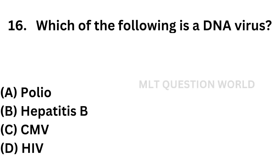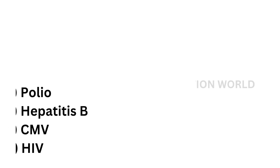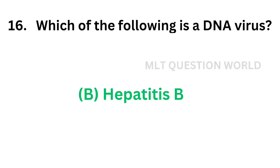Question number sixteen: Which of the following is a DNA virus? Option A: Polio, Option B: Hepatitis B, Option C: Cytomegalovirus, Option D: HIV. The correct answer is Option B — Hepatitis B. Among the following, the DNA virus is Hepatitis B.